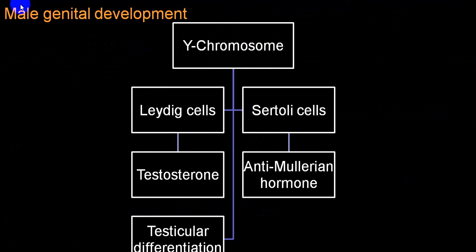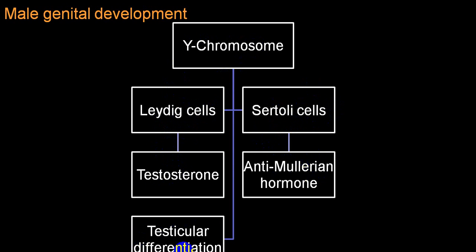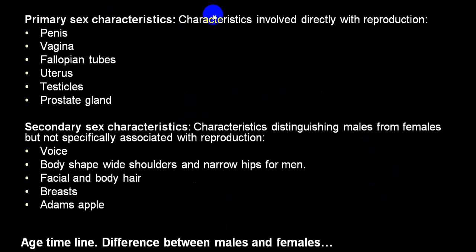During primary sex character development, there is development of penile structures, vagina, fallopian tubes, uterus, testes, and prostate glands. Secondary sex characters include voice, body shape, shoulder, facial and body hair, breast tissue, and the Adam's apple. Development depends on X and Y chromosomes. Acne formation depends on androgen secretion — if androgen secretion exceeds estrogen, acne forms. Secretion from sebaceous glands produces typical body odor, and other changes include voice deepening and Adam's apple appearance.